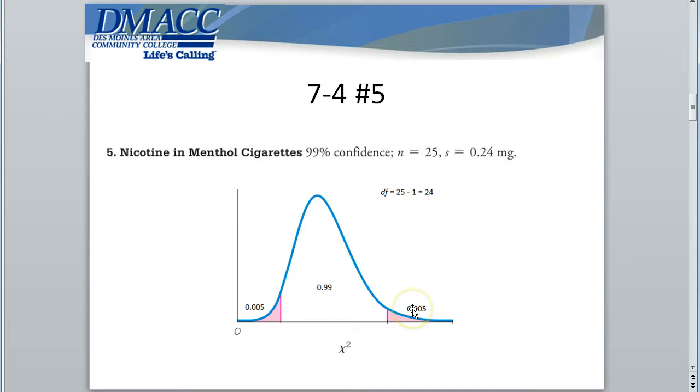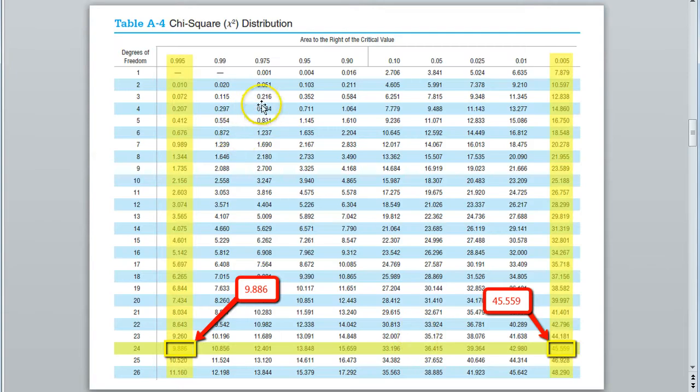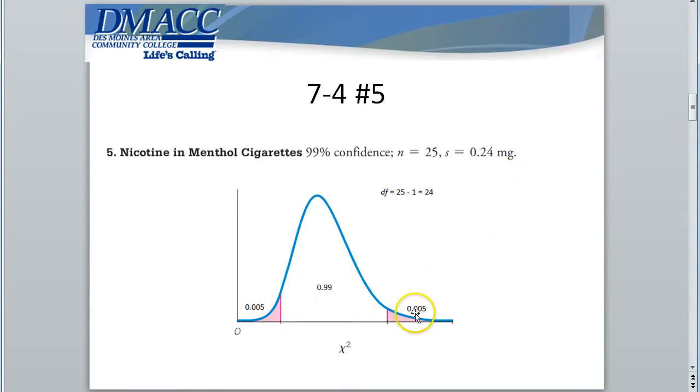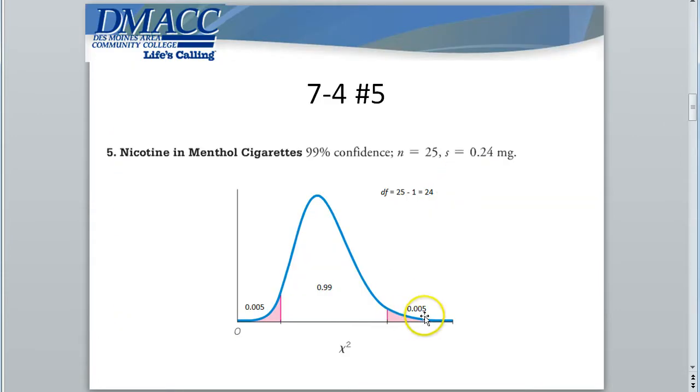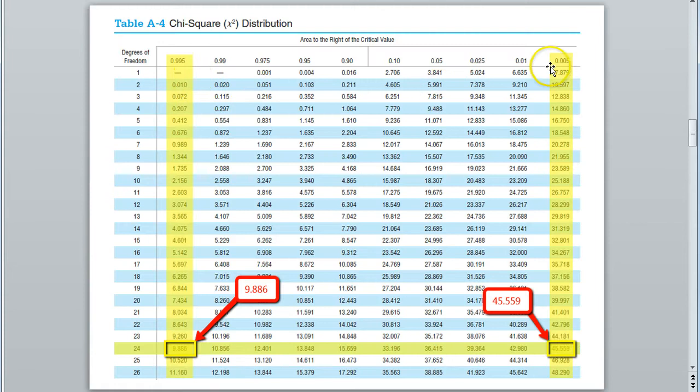So, using 0.995 and 0.005, we look down those columns for the corresponding degrees of freedom of 24 to identify the two critical values as 9.886 and 45.559. Notice, this is on the left side of the chi-squared distribution. This is the left chi-squared value, or left critical value. This 45.559 is on the right side of the chi-squared value. And notice, this will be the right chi-squared, or right critical value.